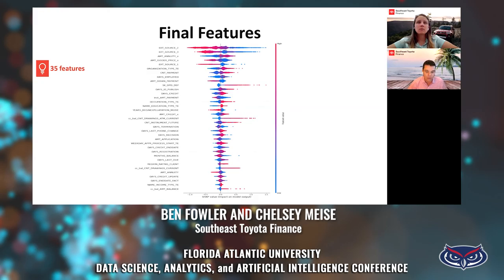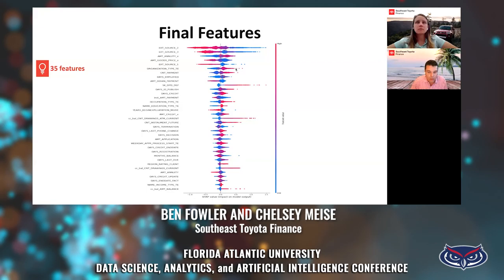The plot sorts features by the sum of SHAP value magnitudes over all samples and uses SHAP values to show the distribution of impacts each feature has on the model output. The color represents the feature value, with red being high and blue being low. The y-axis is sorted by global feature importance, so the most important features are at the top. Since target encoding provides information with respect to the target feature, red values on organization type TE indicate categorical values with higher default rates, and these provide a positive marginal contribution to a default prediction.